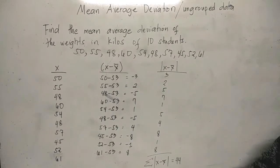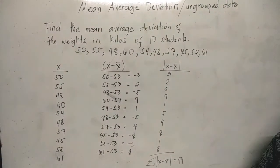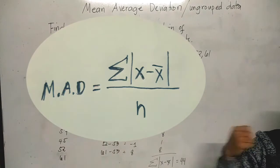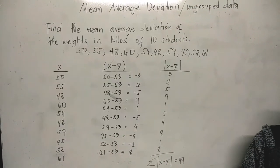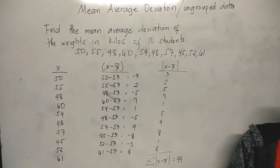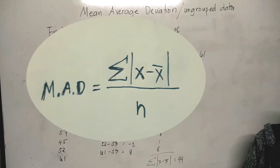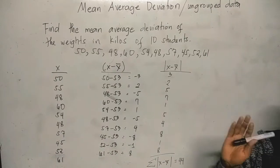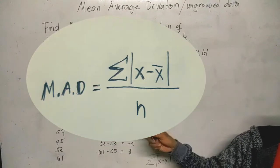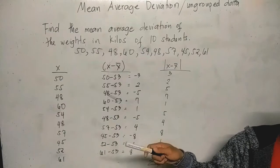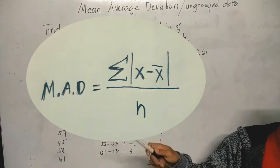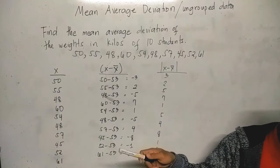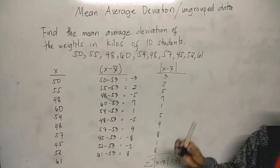In finding the mean average deviation, use this formula. We have MAD or the mean average deviation is equal to summation of absolute x minus x bar or mean all over N. We have sigma for symbol of summation. N is the total number of scores, X is the individual score, and x bar is the mean of all scores.